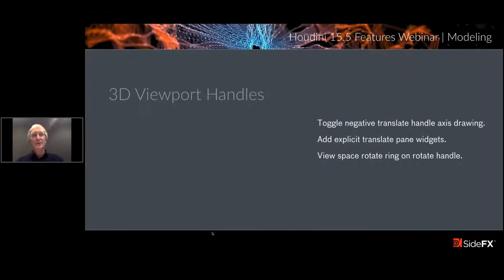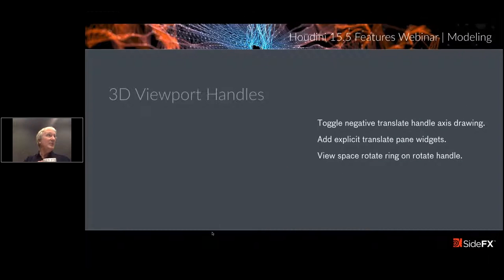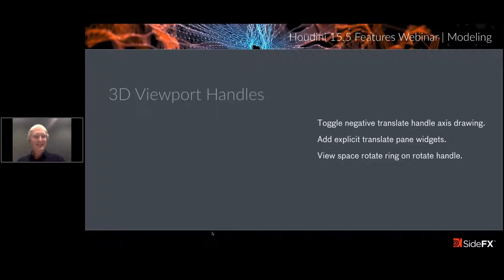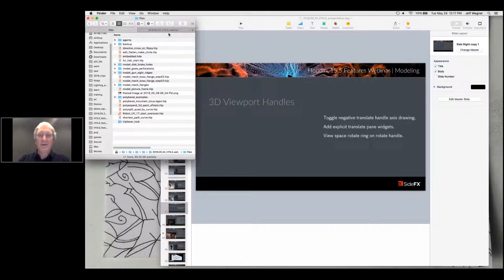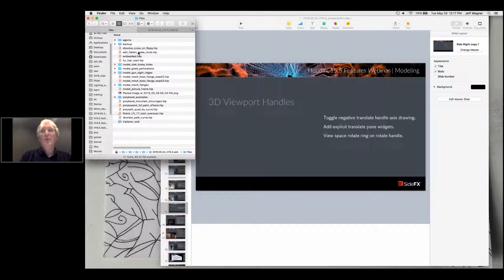Geometry Viewport Snapping. We can now snap to X-ray geometry in the viewport. Occlusion checking has been added for snapping and orientation picking. Remember to turn on Orient on Snap using the right mouse button on any of the four snap options — turn that on and you get that feature for free. For 3D viewport handles, some people wanted to see negative handles as well as positive — there are now lots of options to control that. The Viewspace Rotate Ring on the rotate handle makes a lot of sense when doing animation manipulation.